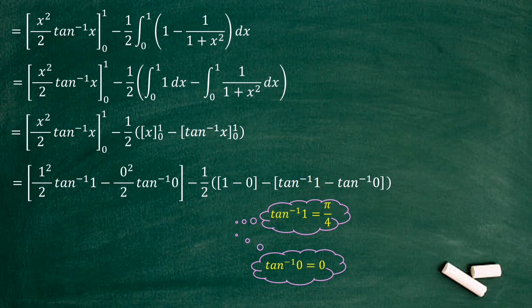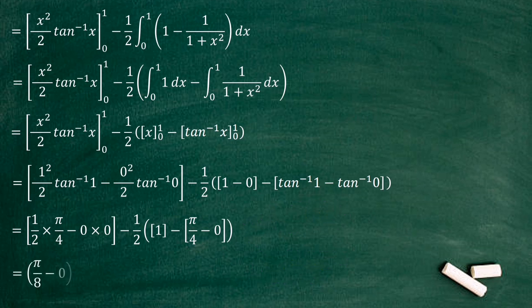Now we can write 1 over 2 times pi over 4 minus 0 times 0, minus half 1 minus pi over 4 minus 0. After that we have pi over 8 minus half within bracket 1 minus pi over 4.